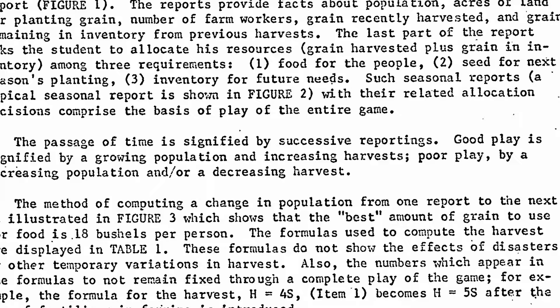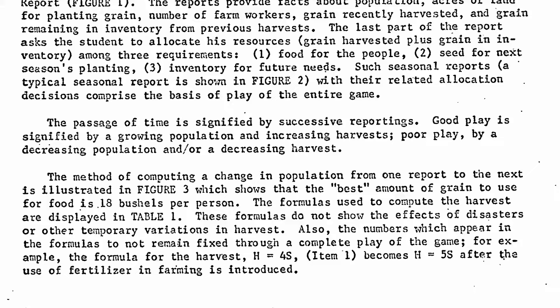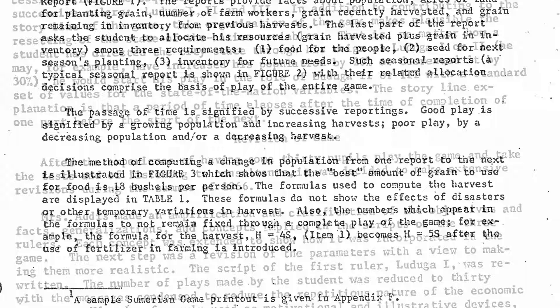For example, once the player gained access to fertilizer, the equation for the harvest would change from H equals 4S to H equals 5S, or the harvest would equal five times the amount of seeds planted. In 1966, Mabel Addis put the second phase of the game through a massive revision.